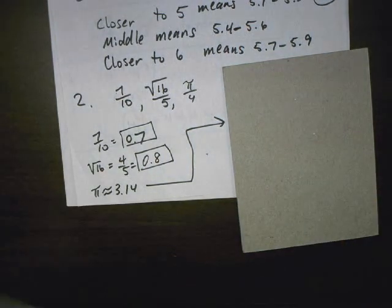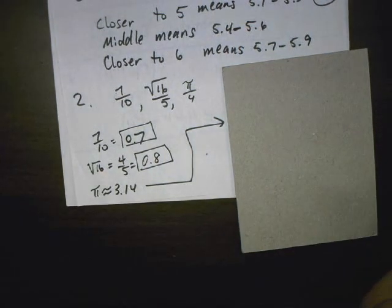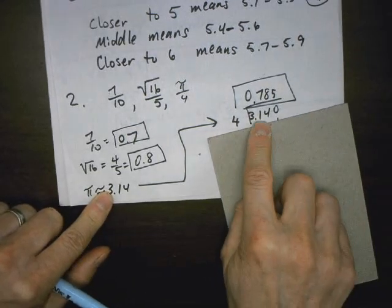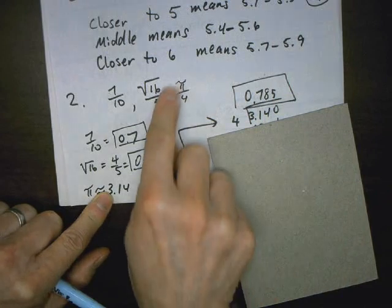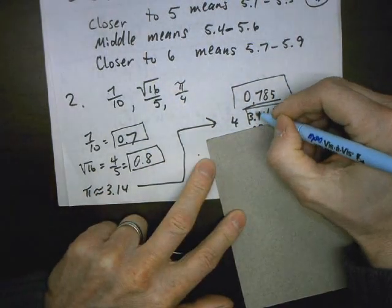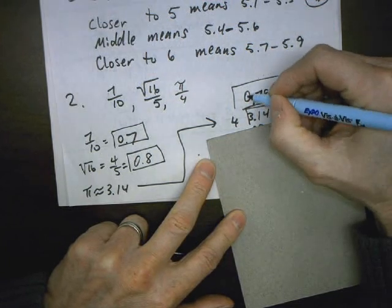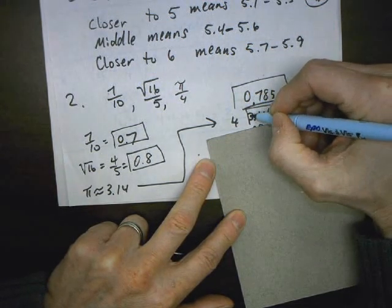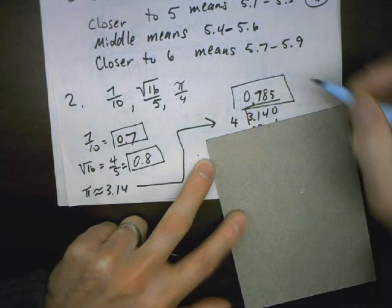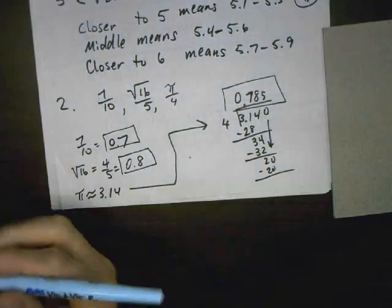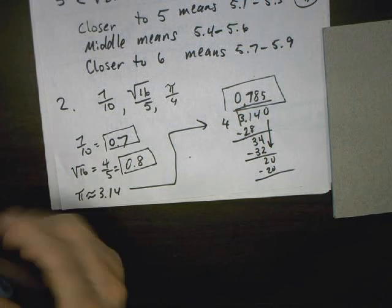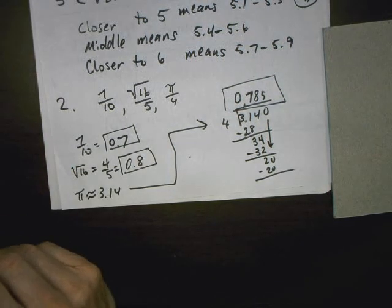For the last one, pi divided by 4. Pi is about 3.14, so we have 3.14 divided by 4. The top goes in, bottom goes out. Put the decimal up top. 4 cannot go into 3, so put a 0. 4 does go into 31, so that's where your first digit goes. Go off to the side, do your division, pause the video and make sure you get what I got.